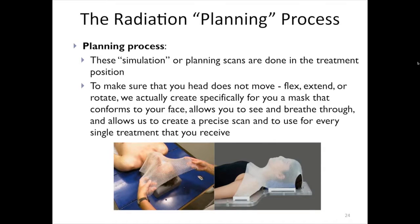We do this in a mask. The mask starts out as a flat piece of plastic that, once put in water, becomes pliable and can be molded over your face and head and neck region. Once cooled, it looks like the bottom right picture — you can see and breathe through this mask, but it basically fixes your shoulders, mouth, face, and head to a table board that does not allow for flexion, extension, or any rotation.